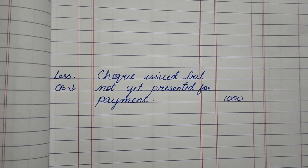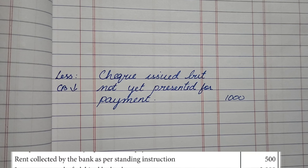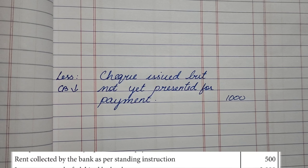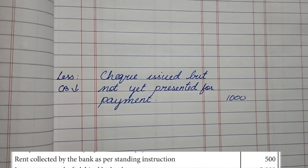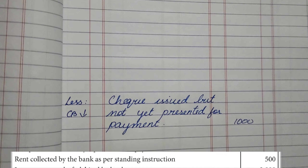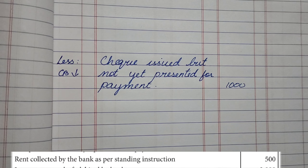Next is rent collected by bank. As per standing instruction, the bank directly collects the rent on behalf of the customer. So the bank receives the amount and the passbook increases, but there is no record of it in the cash book, so the cash book is effectively decreasing. When the cash book is decreasing relative to the passbook, we record it in the Less category.